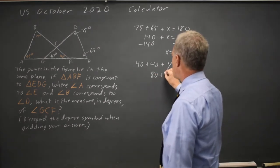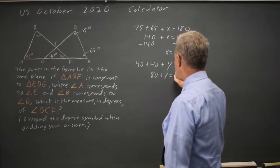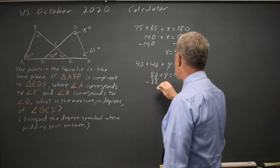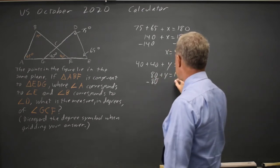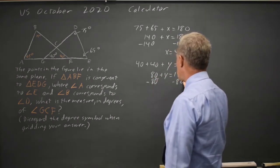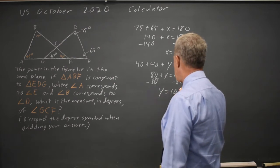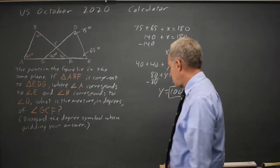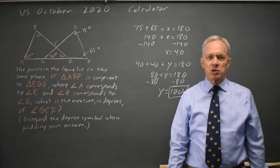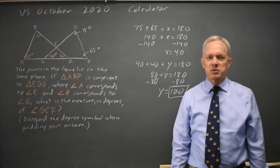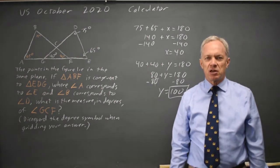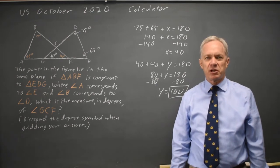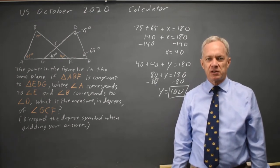80 plus Y equals 180. Subtracting 80, Y equals 100 degrees. The College Board loves questions with similar triangles and often asks this sort of question where you have to find the angles.